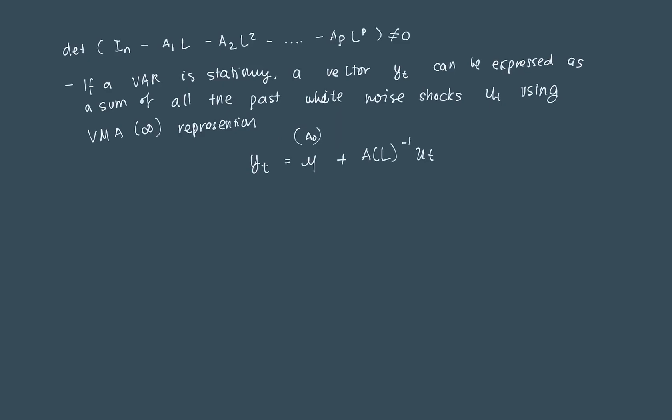If you expand this, that's just Yt equals mu plus your identity matrix plus some parameter, say Psi1L plus Psi2L squared plus so on times Ut. That goes on forever since this is some infinity representation of a moving average model.